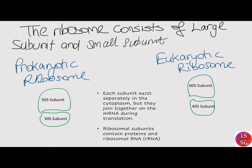Each subunit can exist separately in the cytoplasm, but they join together on the messenger RNA during translation. Ribosomal subunits consist of proteins and ribosomal RNA. Ribosomal RNA is a type of non-coding RNA that facilitates transfer RNA molecules and messenger RNA molecules to process and translate the information into proteins.